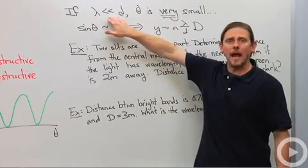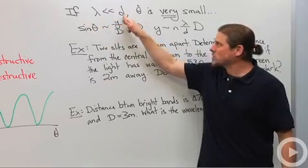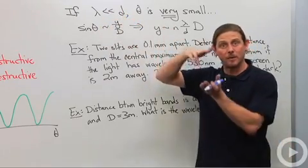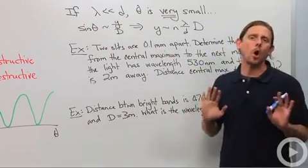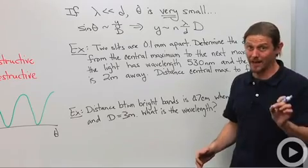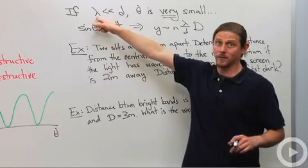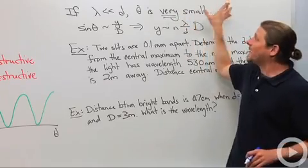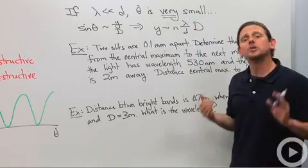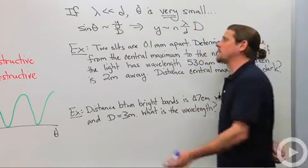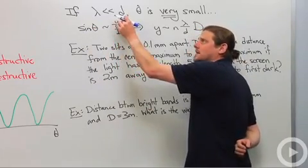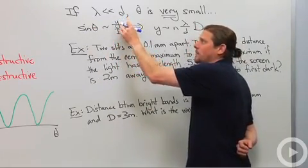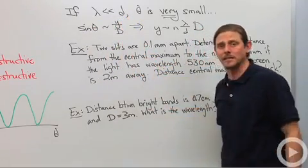So the first thing I want to say is if the wavelength is much, much smaller than this distance d between the two slits, which is almost always the case, especially with light experiments, because the wavelength of visible light is really small, then theta is going to be extremely small. And so then we can use this wonderful approximation and say that the sine of theta is approximately y divided by the distance to the screen, D.